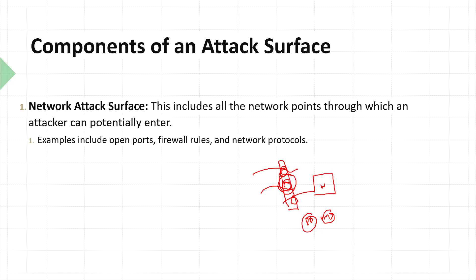Sometimes firewalls are configured with only basic rules — for example, source any, destination web server, source port any, destination port 80. Traffic passes through but the content isn't inspected. If you implement too much inspection on the firewall it impacts performance, so more data is allowed to pass uninspected — and that is an opportunity attackers can use to bypass the network. Keep things simple.